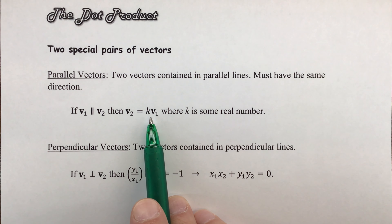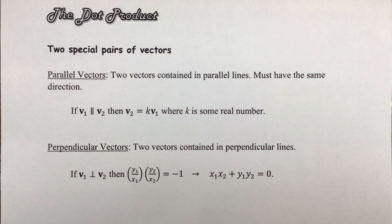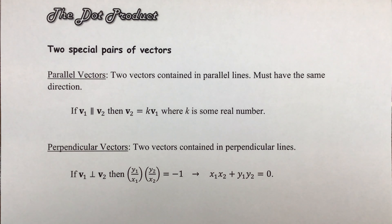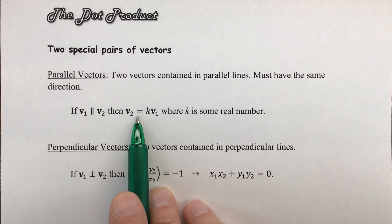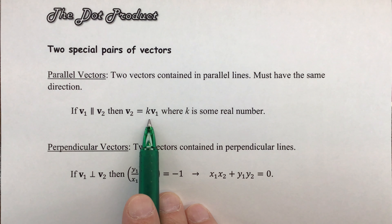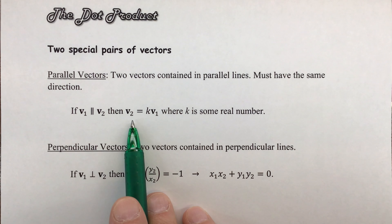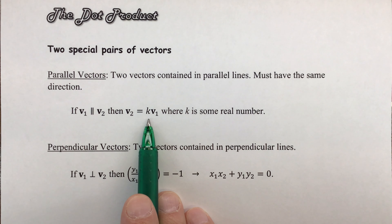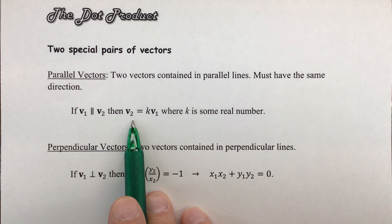What does that really mean? k is just a scalar value. If we think back to component form, what we did is we just distributed that number into the vector, and ultimately all it did was change the magnitude of the vector. Vectors are defined by two things: direction and magnitude. So if you've got two vectors that are parallel, they already have the same direction — the only difference could be the magnitude. k could be greater than one to make vector one the same size as v2, or k could be less than one, which would shrink it down to match.